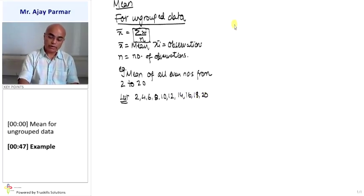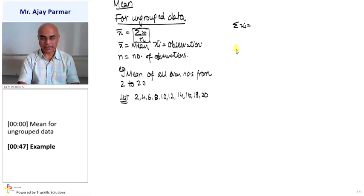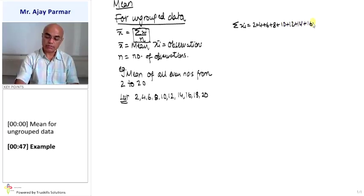Now, finding out sum of all the observations, that is sigma xi, that will be 2 + 4 + 6 + 8 + 10 + 12 + 14 + 16 + 18 + 20.